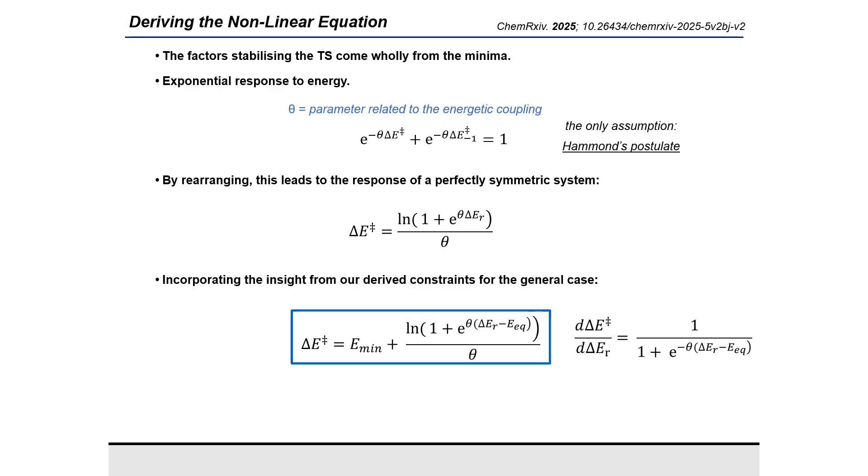Since we know that asymmetry can be accounted for simply by a displacement E_EQ, and that there can be a constant minimum pre-organization energy, which we can call E_min, we can now reach the truly general form of the global kinetic thermodynamic response.